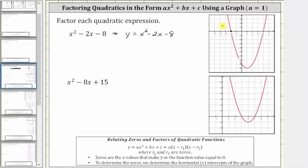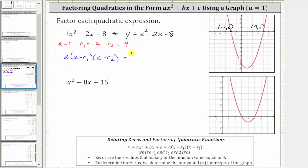Let's record this on the graph. To write the given expression in the form a times the quantity x minus r₁ times the quantity x minus r₂: a, the coefficient of x squared, is one. Let r₁ equal negative two and r₂ equal positive four — it doesn't matter which zero is r₁ or r₂. So we have one times the quantity x minus negative two, times the quantity x minus four. Simplifying, we leave off the one; x minus negative two becomes x plus two. The factored form is the quantity x plus two, times the quantity x minus four.